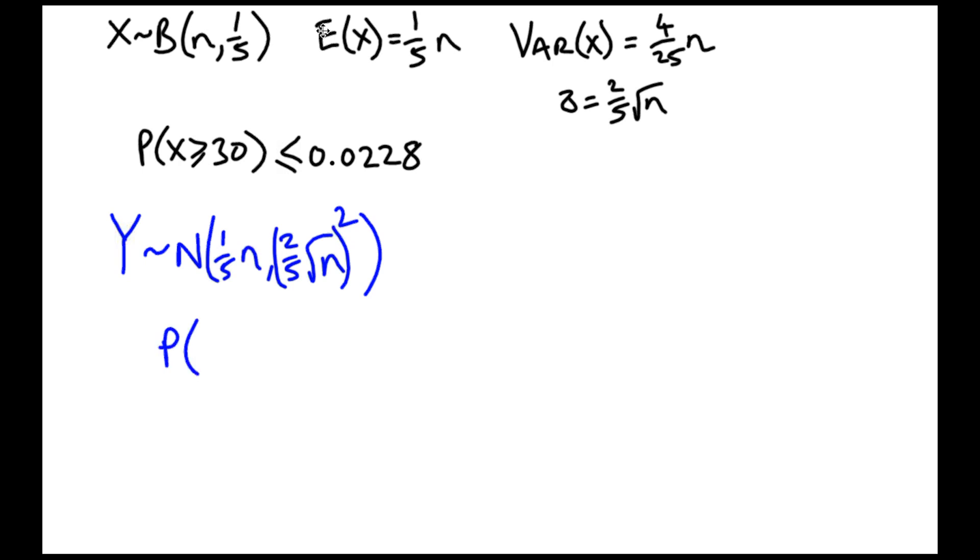To standardise, being careful to keep the continuity correction. I want it to be greater than or equal to 30. Do I want to include 30? Yes, I do. So my continuity correction has to go from 29.5 upwards, which will make sure we keep 30 within the region we're working with. Let's standardise. The probability that z is greater than or equal to 29.5 minus the mean, so that's minus one-fifth of n, all divided by the standard deviation 2 over 5 root n. Let's not forget that is meant to be less than or equal to 0.0228.